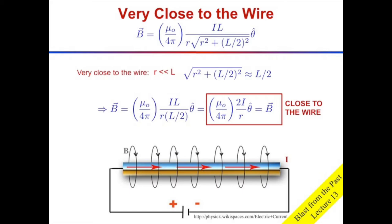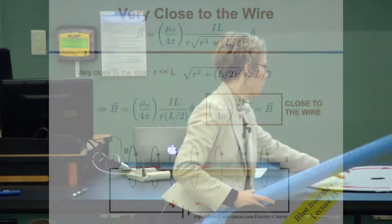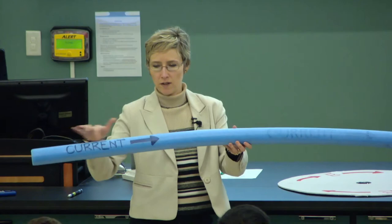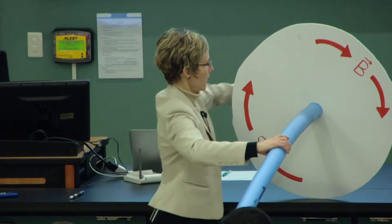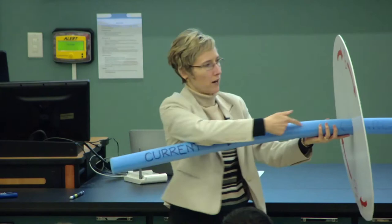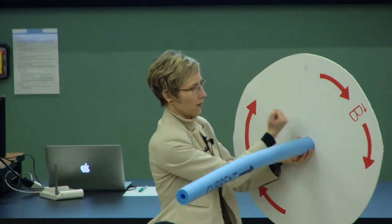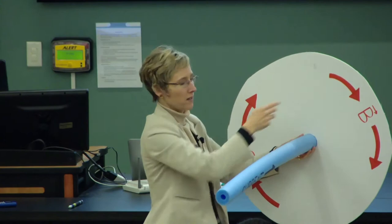The Biot-Savart Law covers what happens when you have a current-carrying wire. What does the magnetic field look like around a current-carrying wire? If current runs in one direction, the magnetic field circles around it. To remember which way: think of a clock and stabbing your alarm clock - the direction of your knife is the direction of the current, and the clock face direction is the magnetic field direction. Or use the right-hand rule: orient your thumb along the current and the magnetic field curls around it.